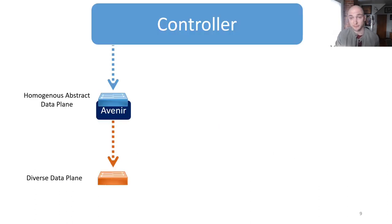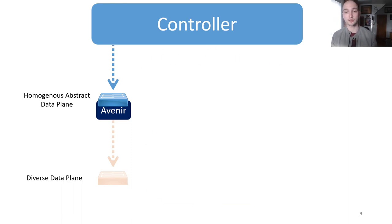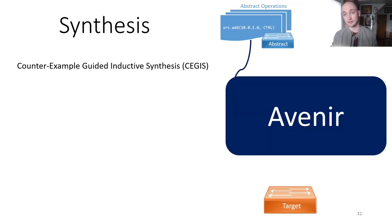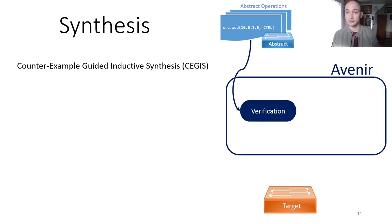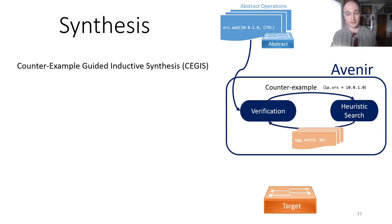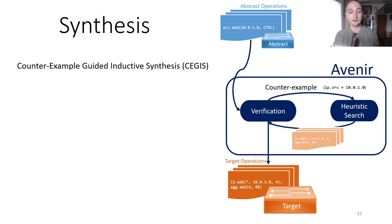What does the deployment of Avenir buy us? Avenir interposes between the controller and an individual data plane switch, hiding the specific details from the controller so that supporting a diverse data plane is automatic. Avenir uses counter-example-guided inductive synthesis as its central algorithm. First, the verification stage checks whether the abstract operation is already implemented on the target switch. If not, the verification stage produces a counter-example that witnesses the behavioral discrepancy, identifying packets that have a source address identified in this newly added rule. This counter-example guides the heuristic search to generate a candidate set of operations, which is then passed back to the verification stage. The algorithm continues searching until the heuristic search generates a correct sequence of candidate operations, which are then installed onto the target switch.